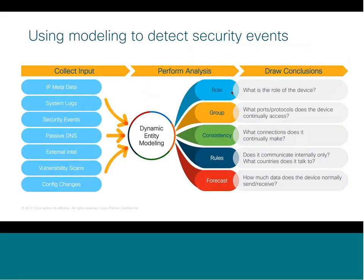Stealthwatch Cloud has an ability we call dynamic entity modeling, which takes every single host or entity in the environment and collects a variety of different inputs — IP metadata, authentication logs, system logs, vulnerability scans, and passive DNS. Over a 36-day baselining period, we perform a number of analysis mechanisms to draw conclusions. The first thing we understand is what is the role of that device — is it an Android device, a DNS server, a database, an iPhone, a printer? We then put that device in a group, looking at consistencies between devices.